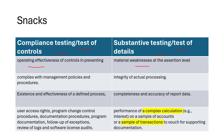Compliance testing is a test of control; substantive testing is a test of detail. Operating effectiveness of controls — for example, checking presence and absence of a change management procedure — is compliance testing. Detecting material misstatement at the assertion level is substantive testing. For example, a policy requiring eight-character passwords: trying to create a shorter password and verifying the system rejects it is compliance testing. Checking the integrity of actual processing output is substantive testing.